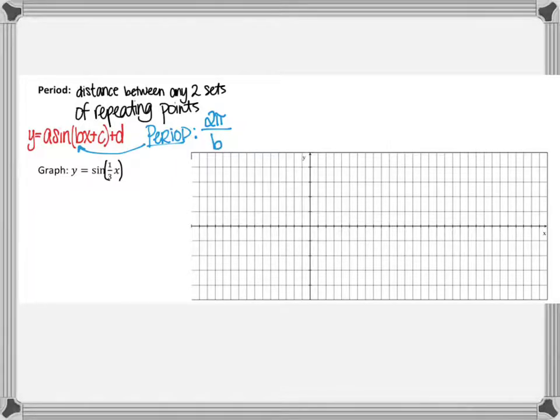So that means for this graph here, the new period would be 2π was the original, our B value is that one third, so divided by one third, or really multiply by the reciprocal. So 6π would be the period on the graph.